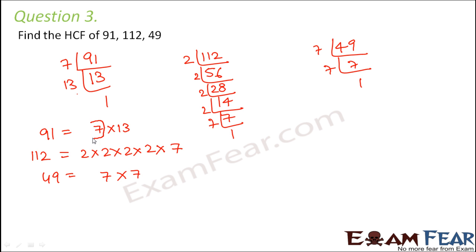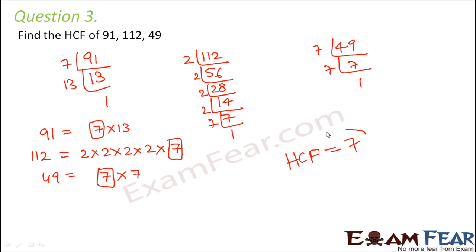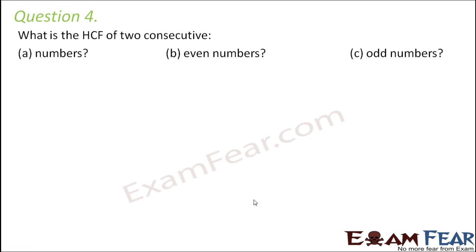Let us find out the common factors. 7 is a common factor because it is present in all of them. Other than that there are no common factors. Therefore the HCF of 91, 112, and 49 is 7.